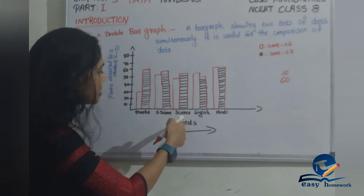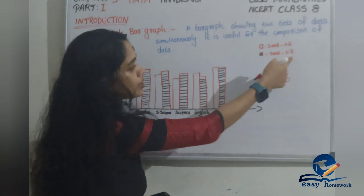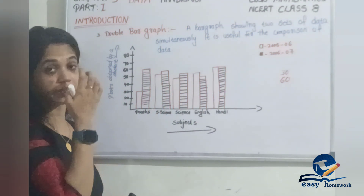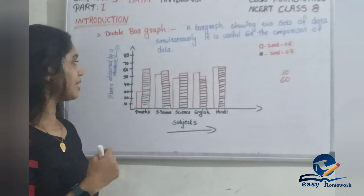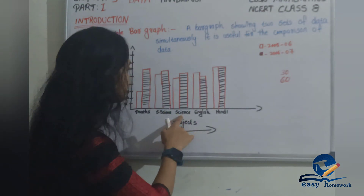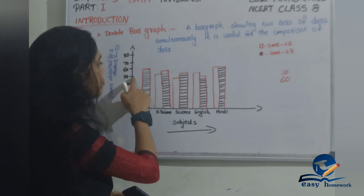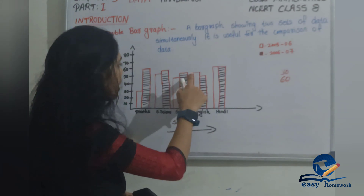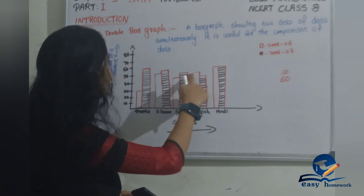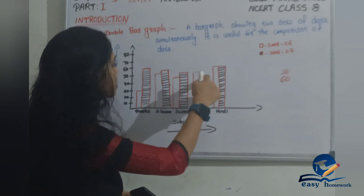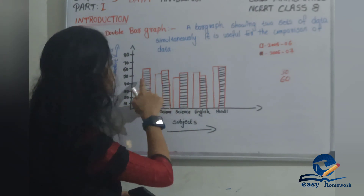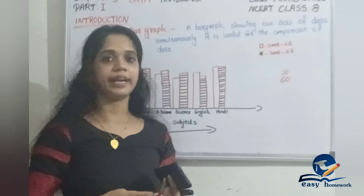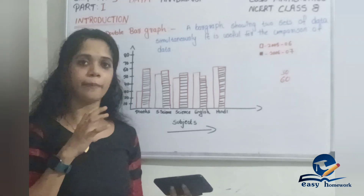Then in the next year, 2006-2007, Social Science is 60 marks. Maths is 50 marks, and the next year shows 55 marks. For English, the first year shows 50 marks, and the next year shows 45 marks. We can see and compare the marks for both years.